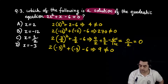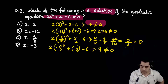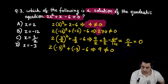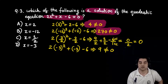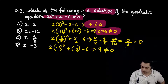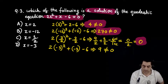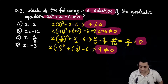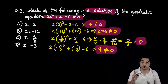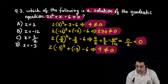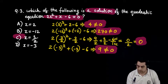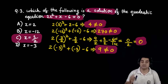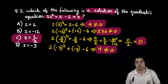Checking each option: x = 2 gives LHS ≠ RHS (4 ≠ 0). x = -12 gives 270 ≠ 0. x = 3/2 gives 0 — LHS equals RHS! x = -3 gives 9 ≠ 0. So the value for which LHS equals RHS is x = 3/2. The answer is option C: x = 3/2 is a solution of the quadratic equation.